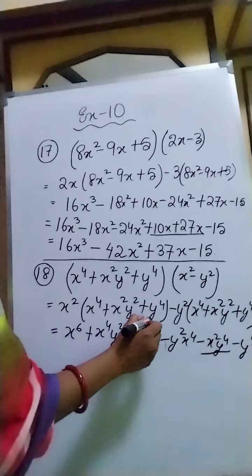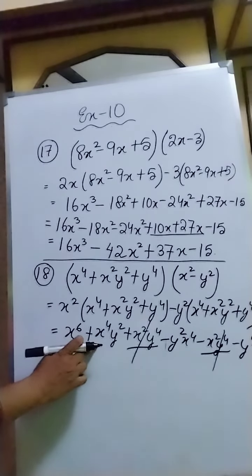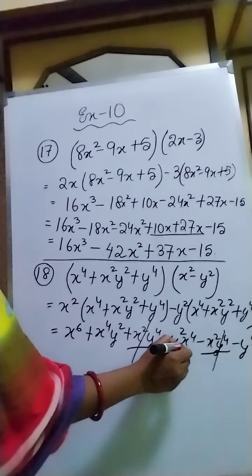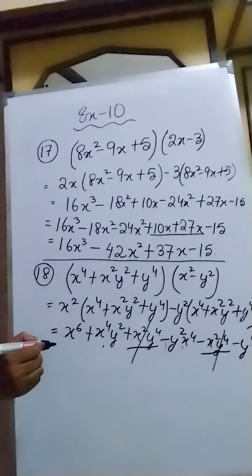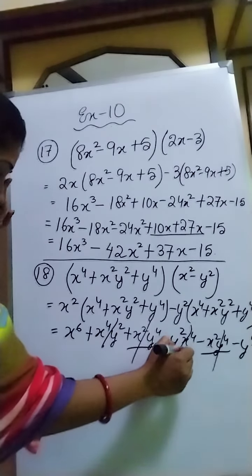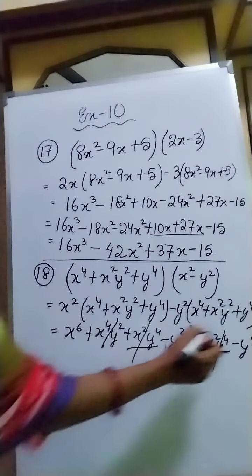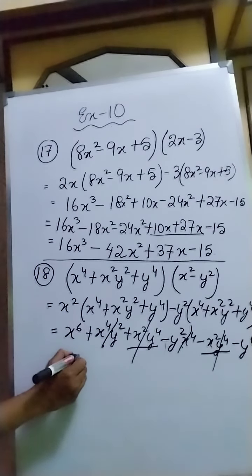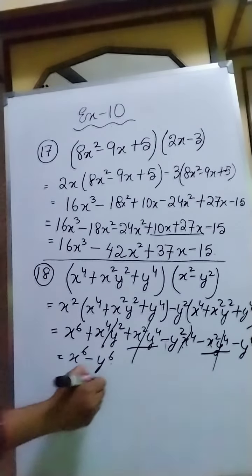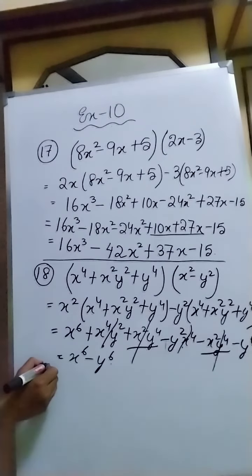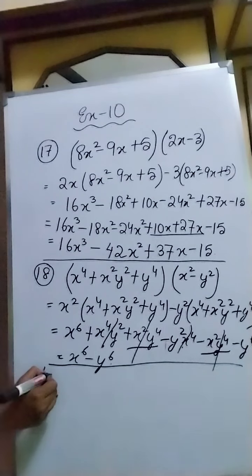Now we will see which terms are cancelling and which are remaining. x squared y to the power 4 minus x squared y to the power 4 — these are similar terms with opposite signs, so they cancel to zero. Again, x to the power 4 y squared minus x to the power 4 y squared — these are also similar terms with opposite signs, so they cancel too. So the remaining terms are x to the power 6 minus y to the power 6. That will be the answer of sum number 18.